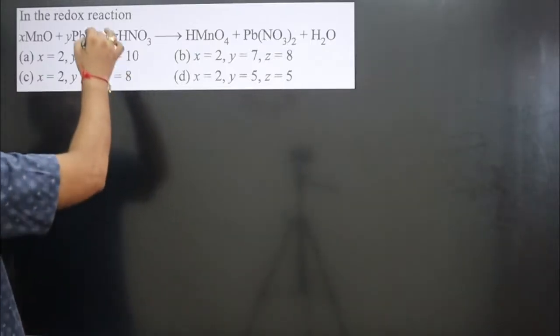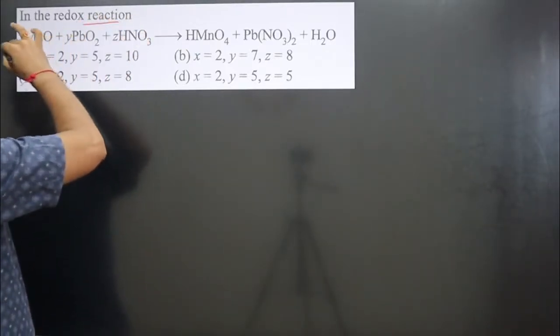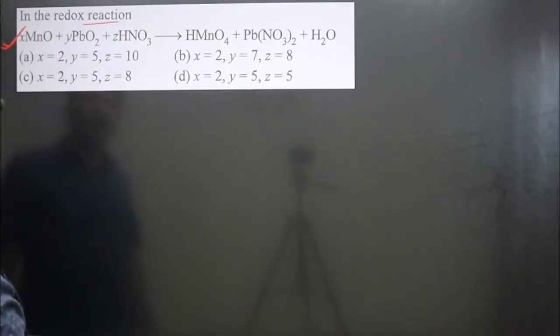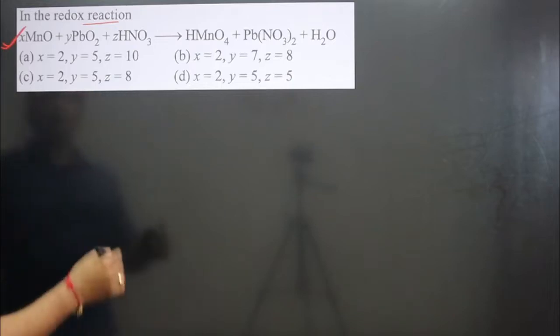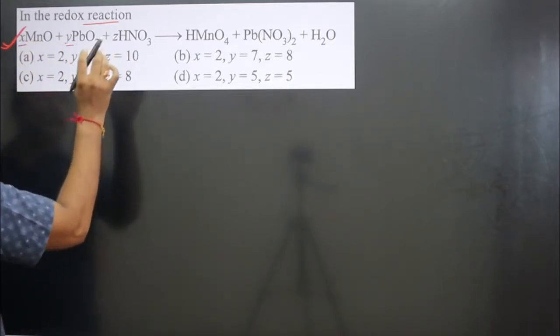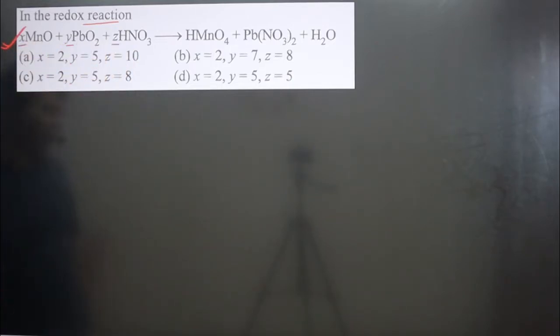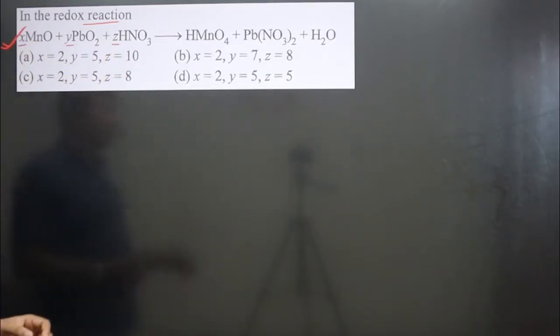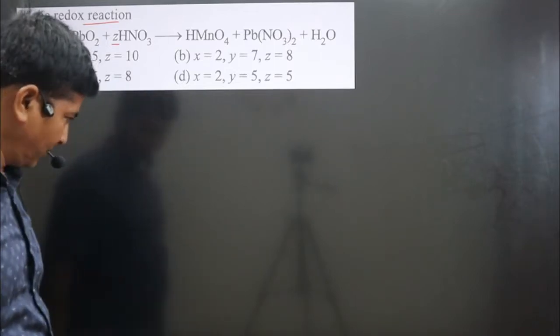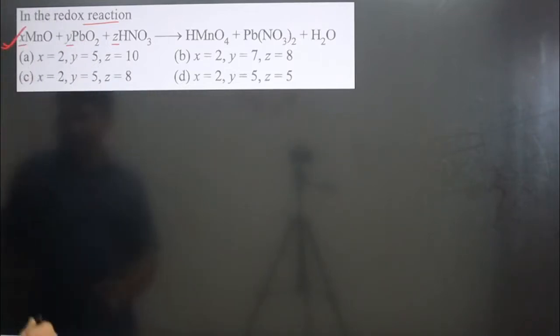The question says: in the given redox reaction, we have to find out X, Y, and Z — the coefficient values. It means we need to balance this equation. Let's balance it.